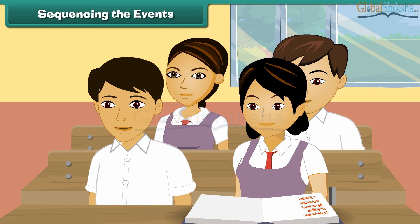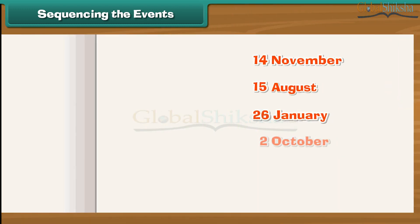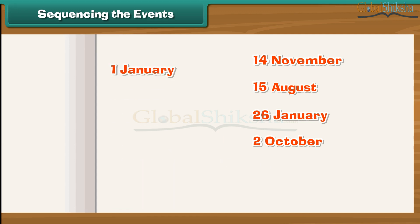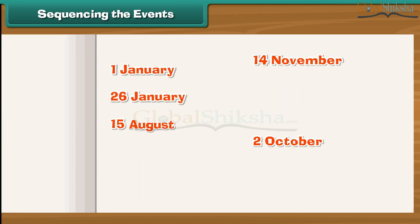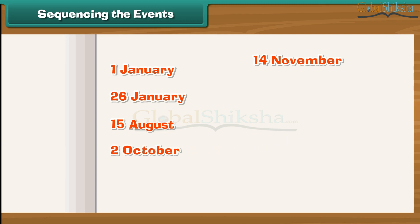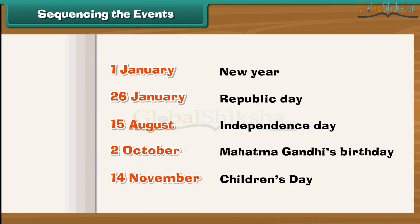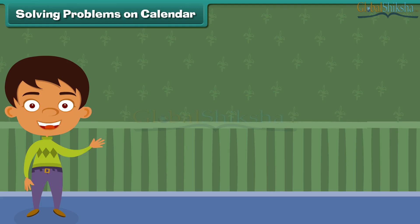Sequencing the events. Anu is at school and has listed some important dates in a jumbled manner. Let us help her arrange the days in the order they come in the year. First is New Year, then Republic Day, then Independence Day, followed by Mahatma Gandhi's birthday, and lastly Children's Day, which is the birth date of our first Prime Minister, Pandit Jawaharlal Nehru.